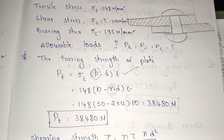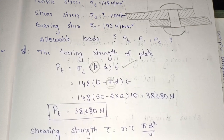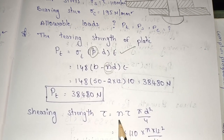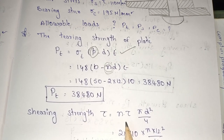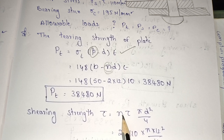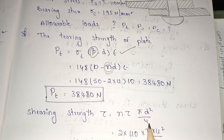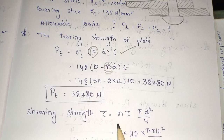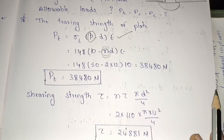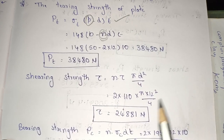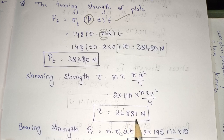The next step is shear strength. Shear strength uses Tau. We add n, the number of rivets. So the formula is ps = n × Tau × (π/4) × d squared. Calculate it — Tau gives ps = 24881 N.